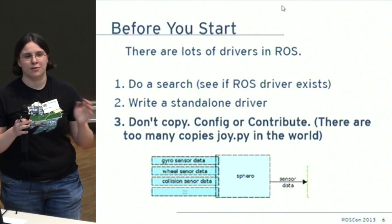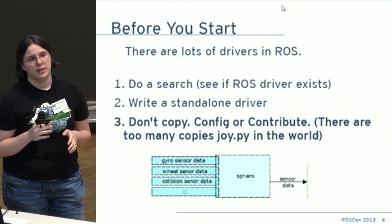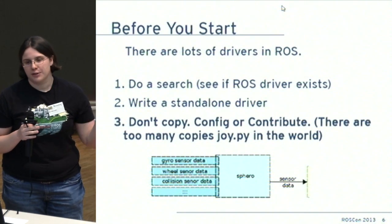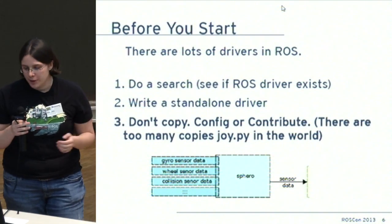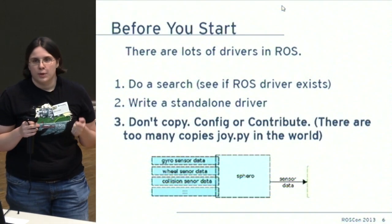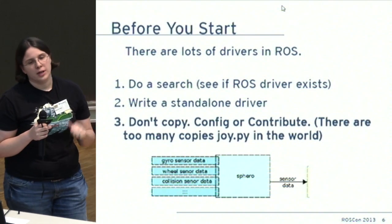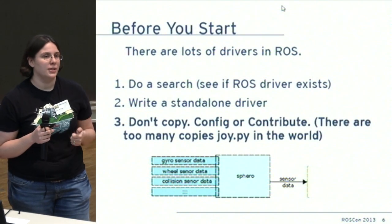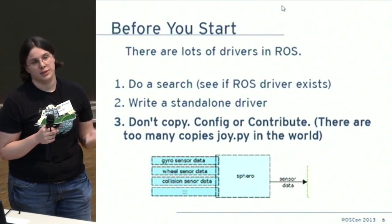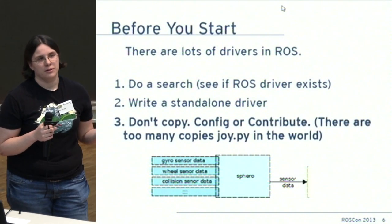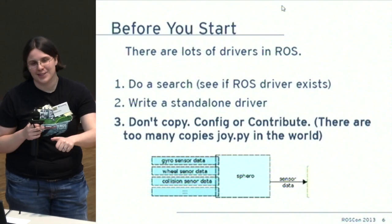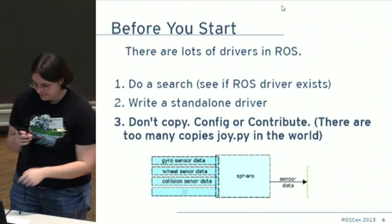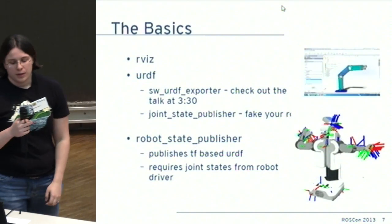And don't copy code. There are seriously about 200 copies of joy.py in ROS — all you're doing is making more work for yourself. It's all BSD licensed so you can copy it, but when someone patches or improves that code, you're not getting the benefits. You have to go in and patch it yourself, and on ROS Answers there are many cases of people copying code and missing fixes from the original driver.